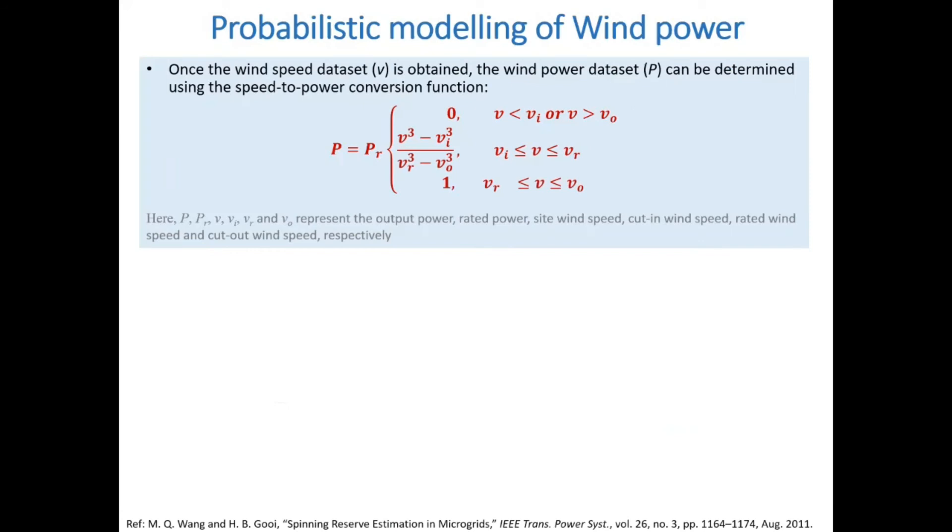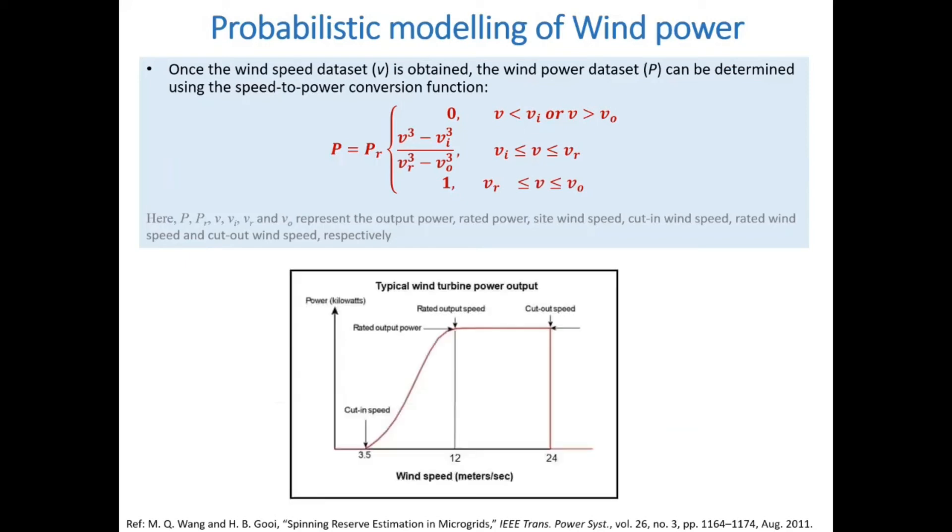Once the wind speed data set is obtained, the wind power data set can be determined using the speed to power conversion function shown here. This function can be understood with the help of this diagram. The lowest speed at which the wind turbine starts producing is the cut-in wind speed. If the wind speed increases, the wind turbine produces more power until it reaches its rated capacity.